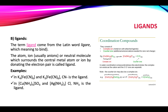Now we come to ligands. The term 'ligand' comes from the Latin word meaning 'to bind.' The atom, ion — usually anions — or neutral molecules which surround the central metal atom or ion by donating an electron pair are called ligands. This electron pair donor can be an atom, an ion (mostly anions), or a neutral molecule. Its purpose is to donate the electron pair to the central metal atom through coordinate covalent bond. Examples: the cyano group and ammonia acting as ligands.